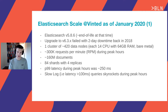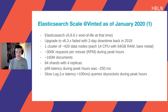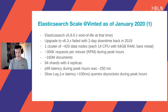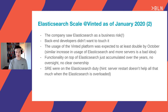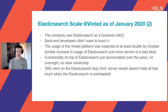The search throughput was around 300,000 requests per minute during peak hours — meaning evenings when people browse the most. We had about 160 million documents in our primary index, divided into four shards with four replicas. The 99th percentile latency during peak hours floated around 200 to 250 milliseconds. The cluster had performance issues, and slow queries — those with latency over 100 milliseconds — just skyrocketed during peak hours. From the company perspective, the Elasticsearch installation was seen as a business risk.